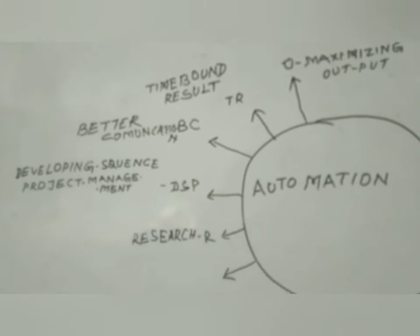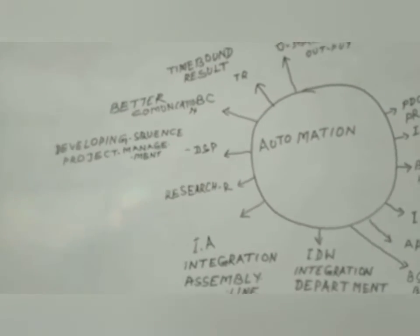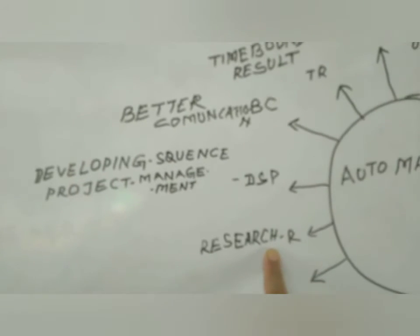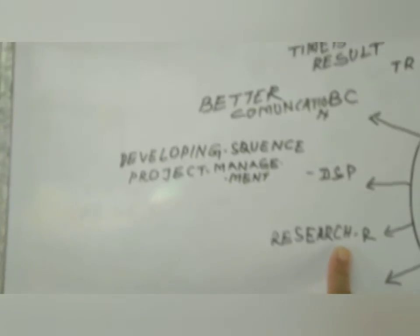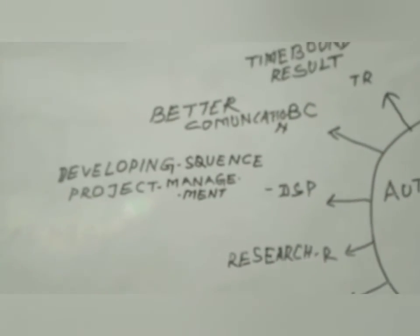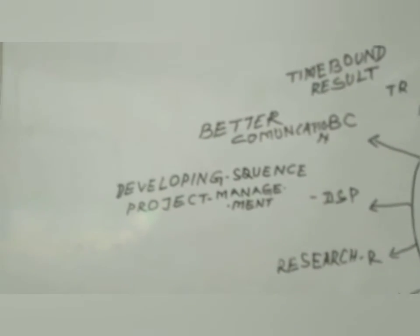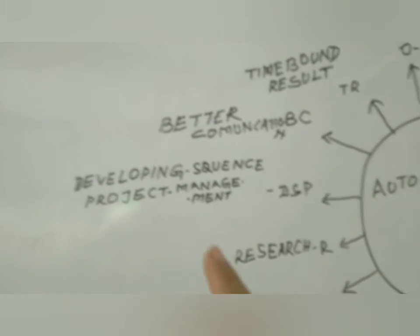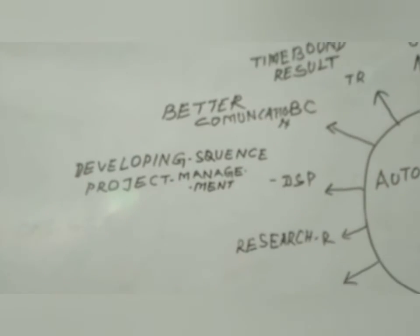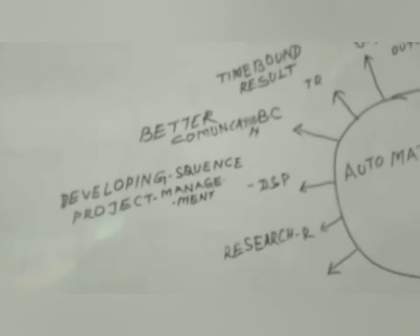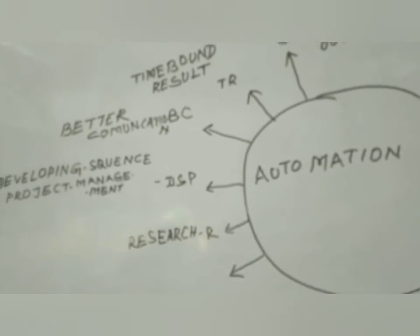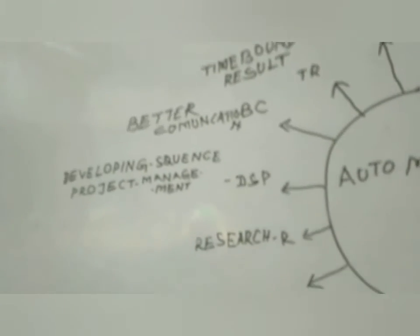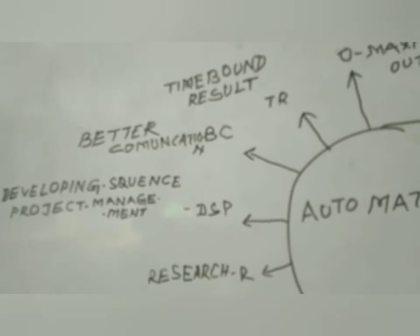In this diagram we also discuss the research part. Research is an important part which helps to identify the basic needs of automation and how to develop it. And developing sequence project management means integration with project management and operation management in a particular system.